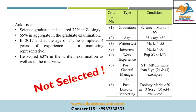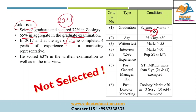The first candidate profile given is Ankit. He is a science graduate and has secured 72 percentage in Zoology, and 65% aggregate in the graduate examination. Regarding age, in 2017 he was 24 years old, so for the year 2021 his age will be 28 years — so he fits into the age criteria.